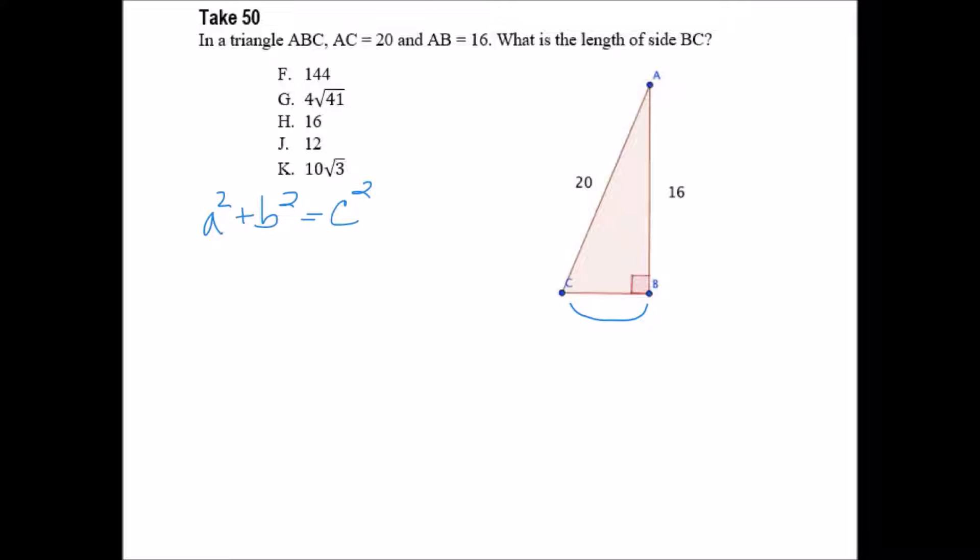We are given one of the sides, so let's say that's 16 squared. We are not given the value of B squared, and we are given the value of the hypotenuse of 20 squared.